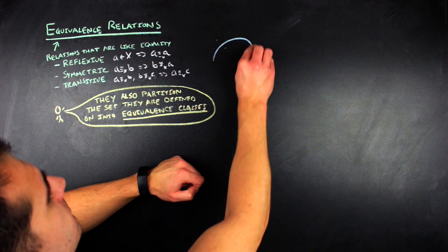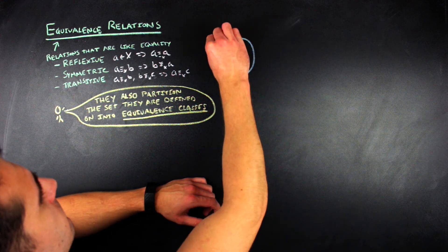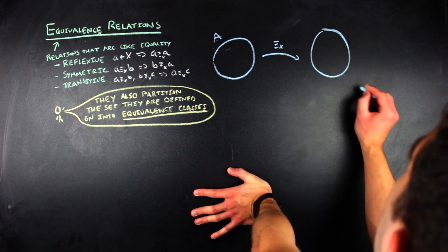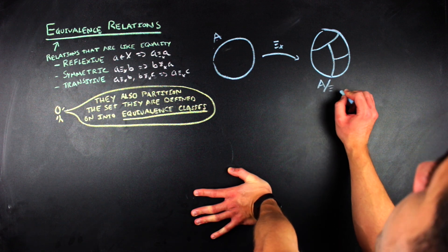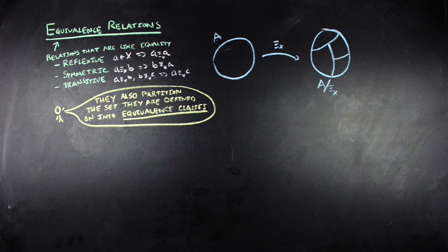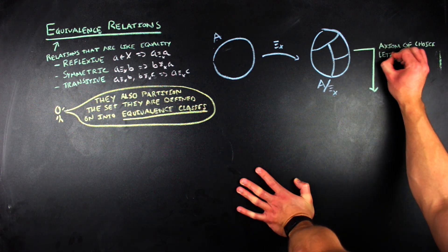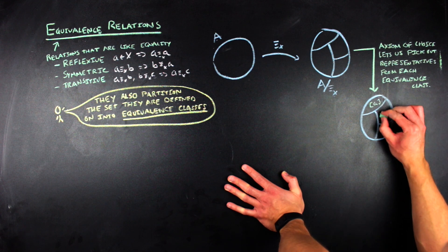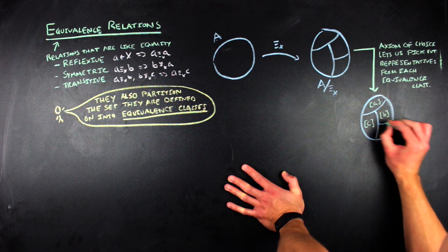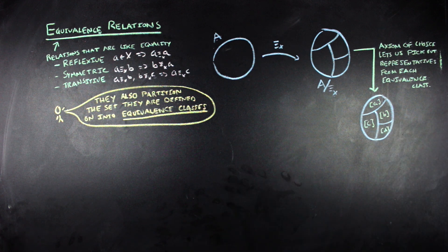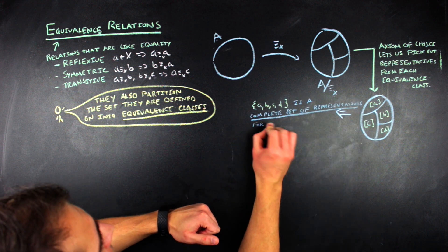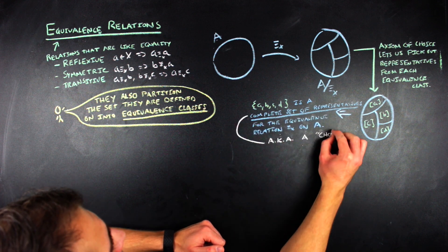For illustration, if we have a circle as our set and an equivalence relation on that set — let's call it ≡ₓ — then that relation breaks up our set into different sections of the circle. Using the axiom of choice we can pick out a representative from each equivalence class: so the top sector is [a], another is [b], [c], and [d]. The set {a, b, c, d} is then a complete set of representatives, or a choice set for our set under this equivalence relation.